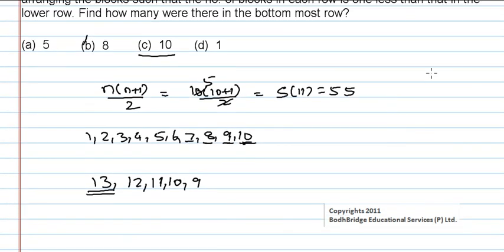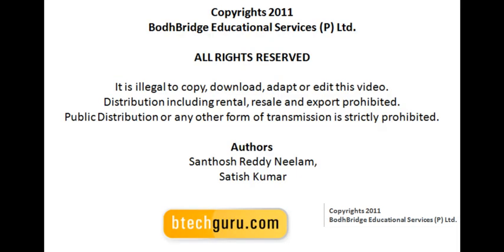The answer depends on the options given. Here we have option C, which is 10. So we can assume she is arranging the blocks as 10, 9, 8, 7, 6, 5, 4, 3, 2, 1. She could also arrange them as 13, 12, 11, 10, 9, but since the question asks for the bottom most row and option C (10) is available, option C is correct.